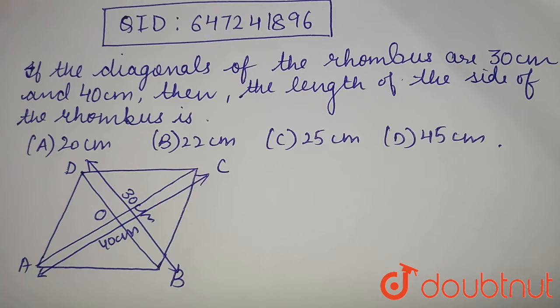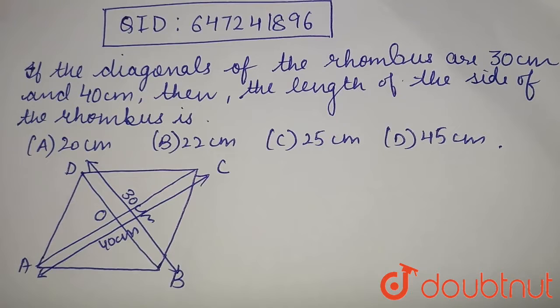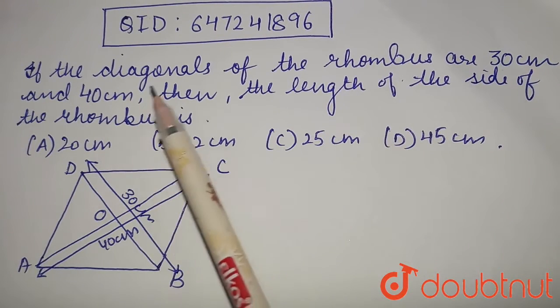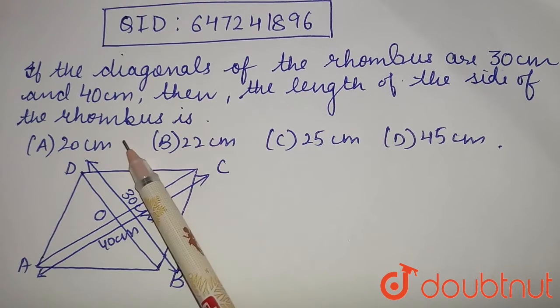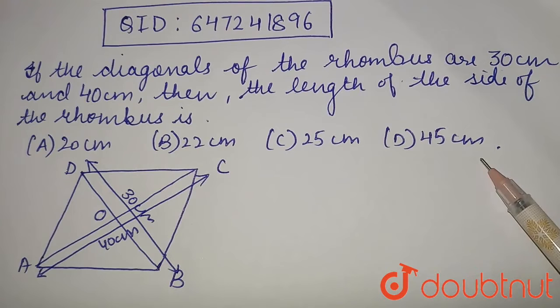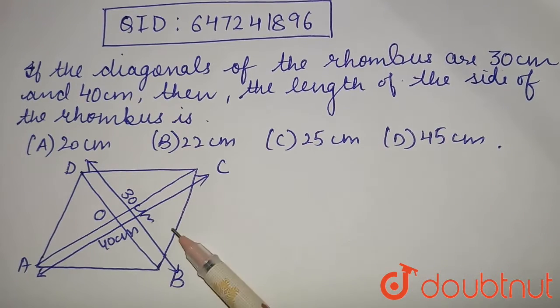Greetings from Doubtnut. So the question we have is, if the diagonals of the rhombus are 30 cm and 40 cm, then the length of the side of the rhombus is 20 cm, 22 cm, 25 cm or 45 cm. Using this question, we have drawn a figure.